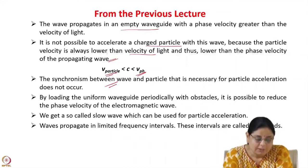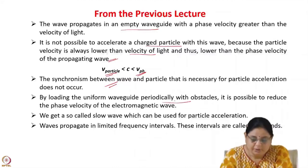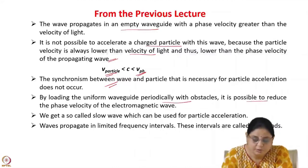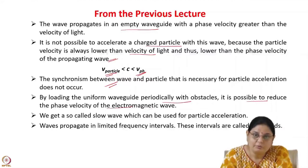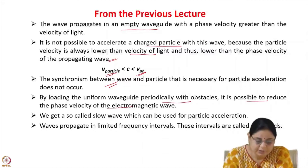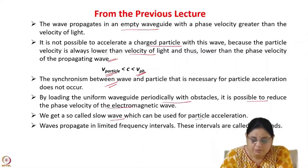By loading the uniform waveguide periodically with obstacles, it is possible to reduce the phase velocity of the electromagnetic wave. We saw that by introduction of space harmonics, the phase velocity of the wave in the waveguide can be reduced. So we get what is known as a slow wave, which can be used for particle acceleration.